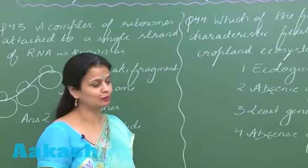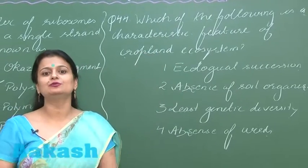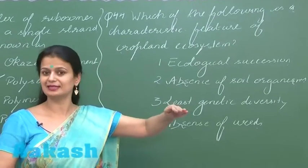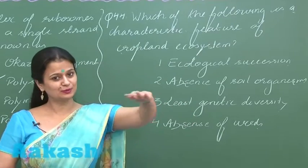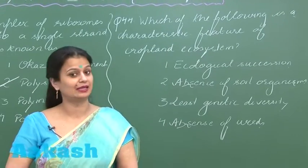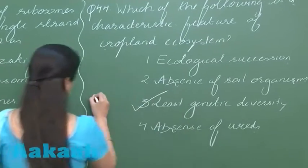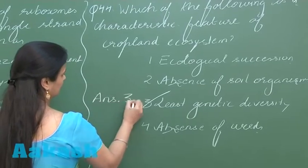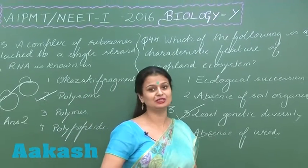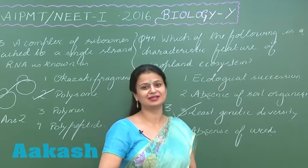Question 44 asks us to look for the correct option with respect to the cropland ecosystem. A cropland ecosystem means a single crop is grown there — it is an artificial ecosystem. When a single crop is grown, the genetic diversity in such an ecosystem is less. The right option is option number 3. In an artificial ecosystem, productivity is more but genetic diversity is less.